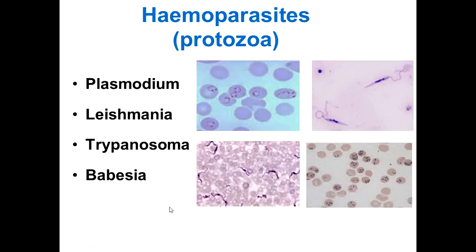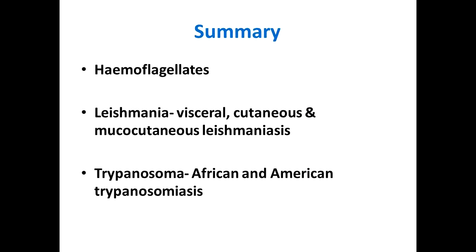Some filarial parasites are also included in the list of hemoparasites. In summary, Leishmania produces visceral, cutaneous, and mucocutaneous leishmaniasis. Trypanosoma has two main species producing either African or American trypanosomiasis (Chagas disease). Since Trypanosoma and Leishmania have flagella and reside inside the blood, they are known as hemoflagellates.